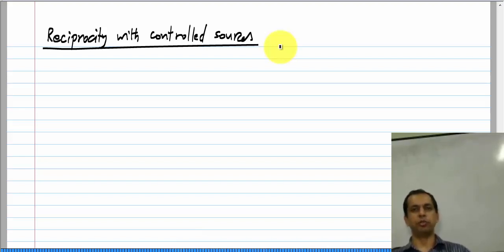You can define it in terms of these two-port parameters: Z12 will be Z21, Y12 will be Y21, H12 will be minus H21, or G12 will be minus G21.